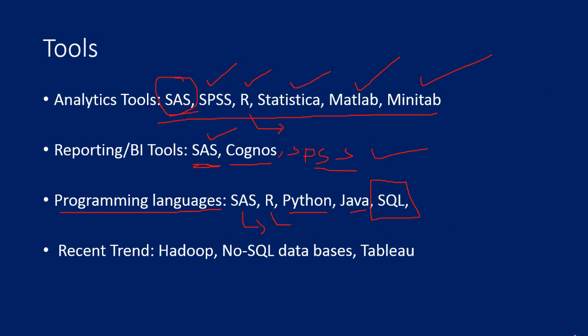You always need to extract data from one place and then consolidate data or split the data into different smaller datasets. For all that, you need to use SQL — Structured Query Language. But in recent times, things have changed a lot. SAS is losing its popularity or market share to R and Python.